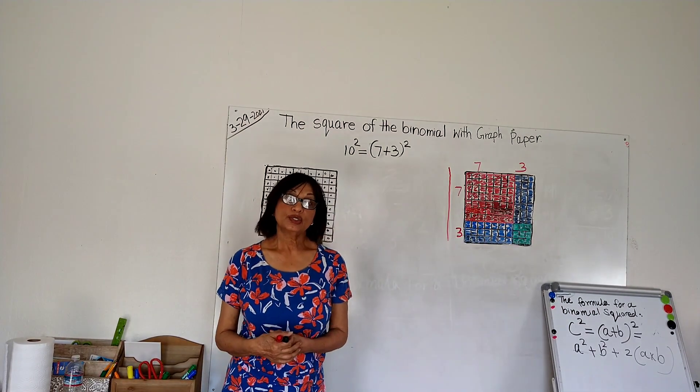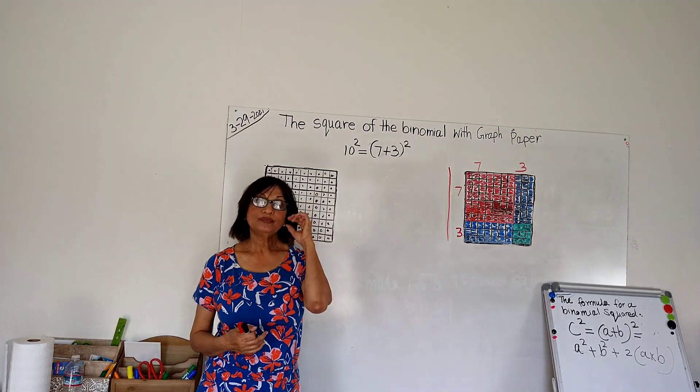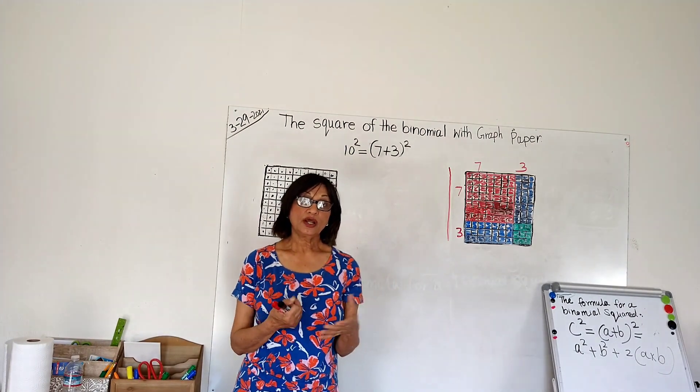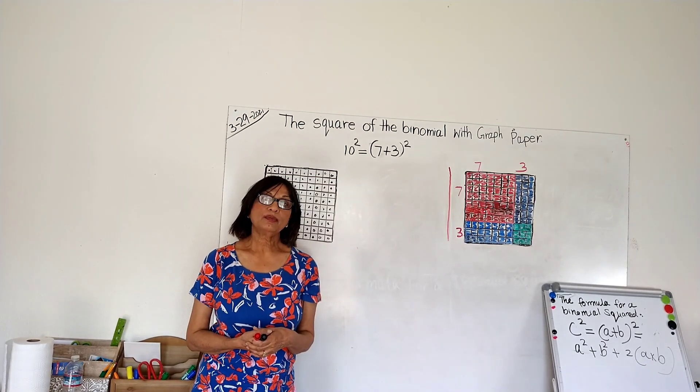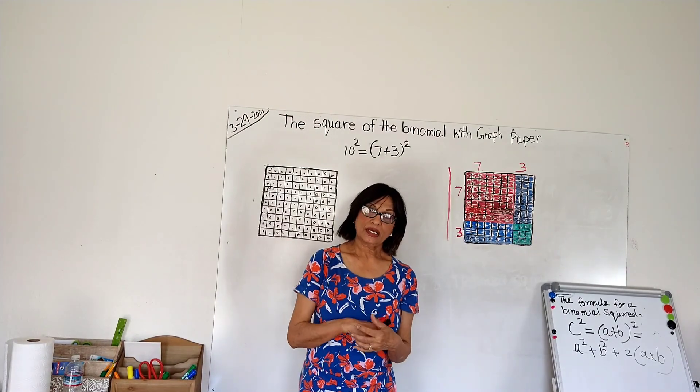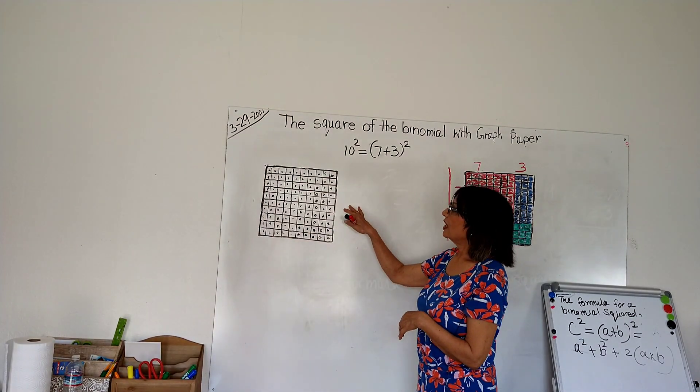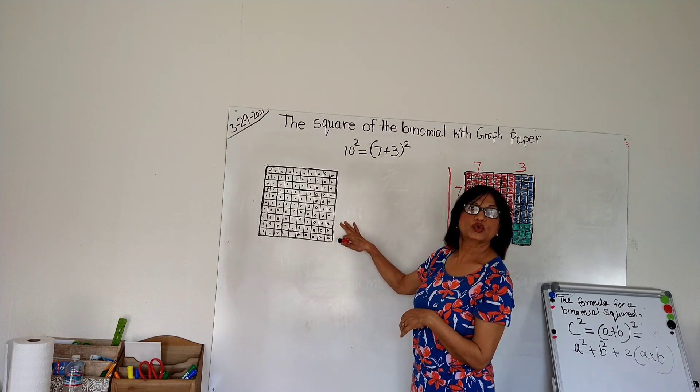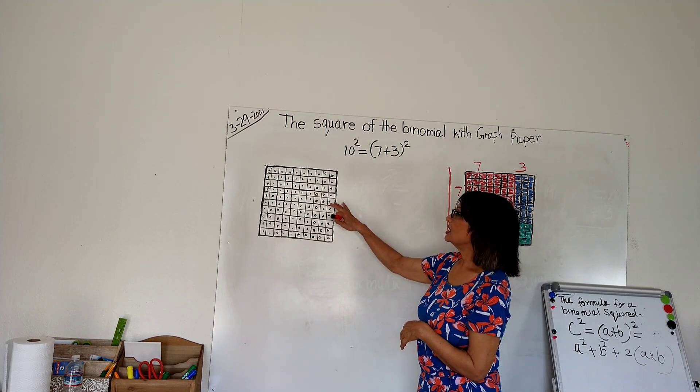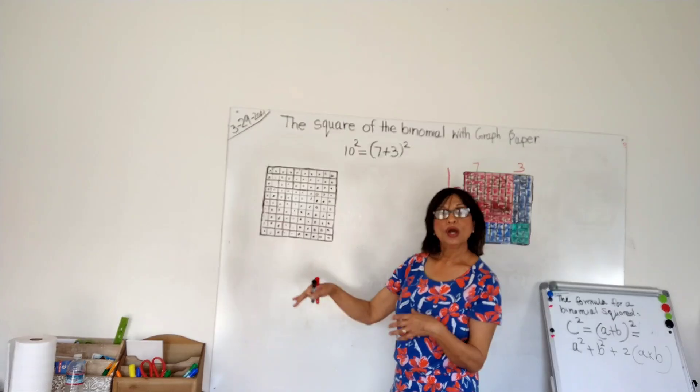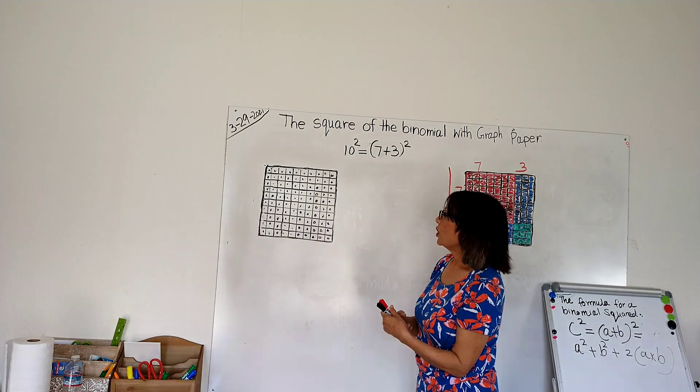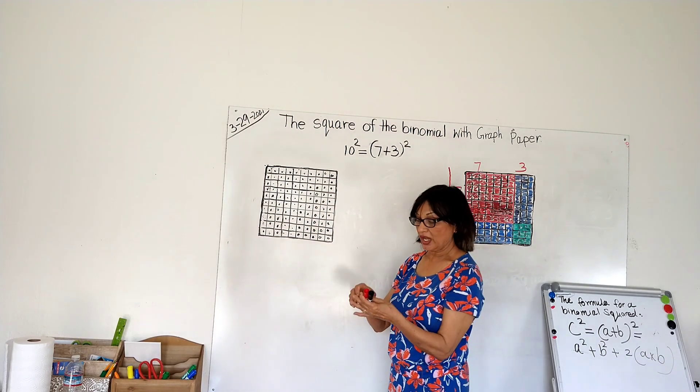Hi everyone, today we are going to learn the square of a binomial with graph paper. I'm going to show you in a very concrete way. So let's get started. Here I have a square of 10 and it has 100 beads in it, or 100 small squares in it, so we can count it this way also.